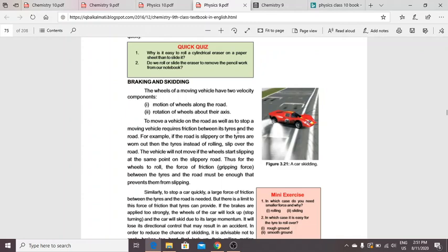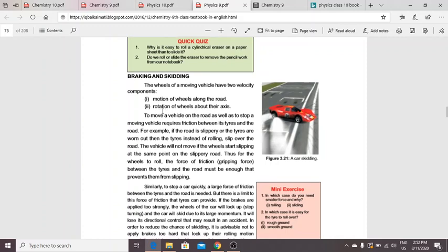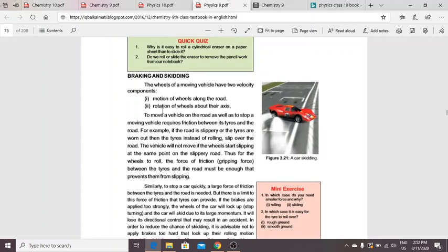Number one: motion of wheels along the road. And number two: rotation of wheels about their axis. To move a vehicle on the road, as well as to stop a moving vehicle, friction is required between its tires and the road. For example, if the road